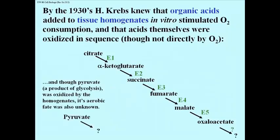Pyruvate, one of the end products of glycolysis, originally called the Emden-Meierhoff pathway, which had been discovered earlier. The fate of pyruvate was not known.